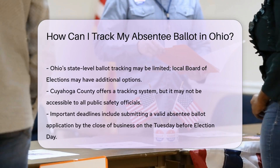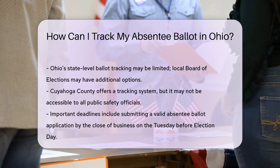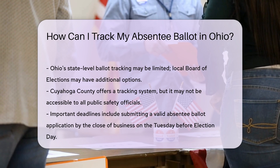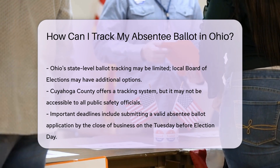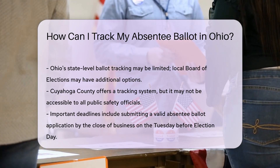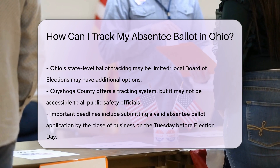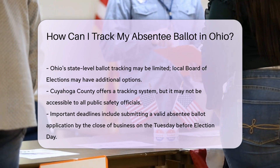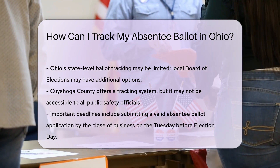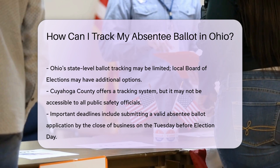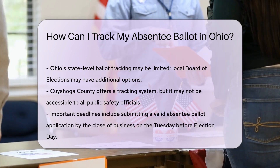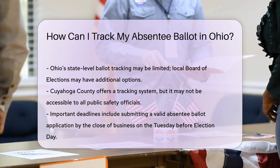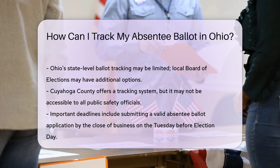Step 3: Track your ballot. Once your ballot is requested and sent to you, you can track its status. However, Ohio's state-level tracking system may be limited. Instead, you might need to check with your local Board of Elections for specific tracking options. For instance, Cuyahoga County provides a tracking system, but it may not be available for all public safety officials.